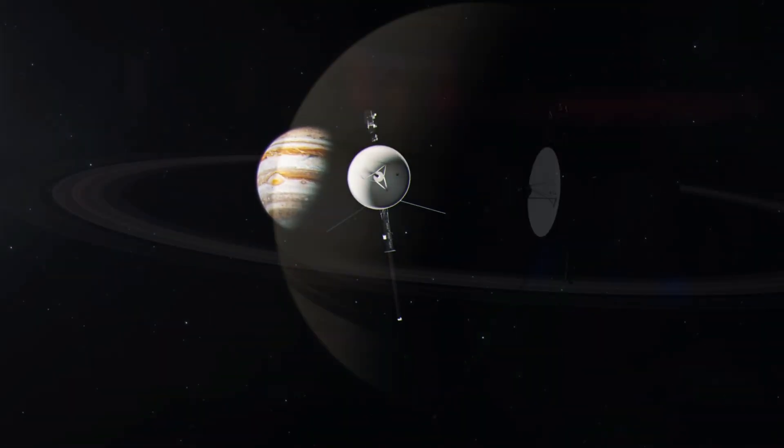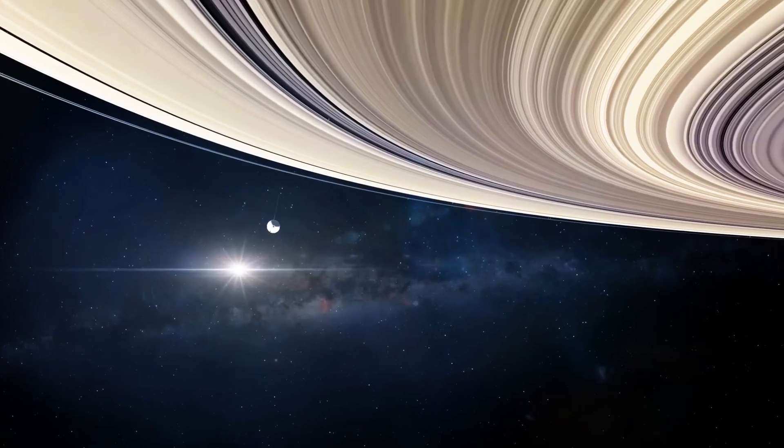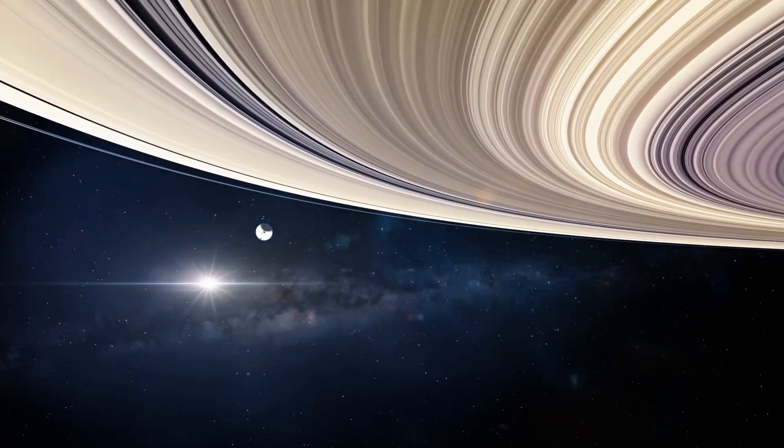On February 14, 1990, from an astonishing 3.72 billion miles away, Voyager 1 took one final photograph: Earth as a tiny, pale blue dot, just 0.12 pixels in size. This image became one of the most famous in human history, marking the last time Voyager 1's cameras would ever operate.